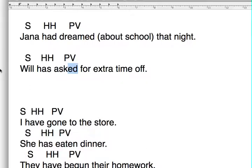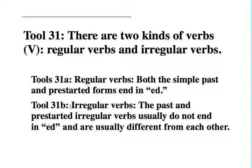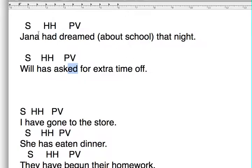These other examples are what we call irregular verbs. Section 31b: irregular verbs means the past and the pre-started irregular verb usually do not end in -ed and are usually different from each other. Going back to our regular examples — today I dream, yesterday I dreamed, Jonna had dreamed. That's regular. Today I ask, yesterday I asked, Will has asked. That's regular.